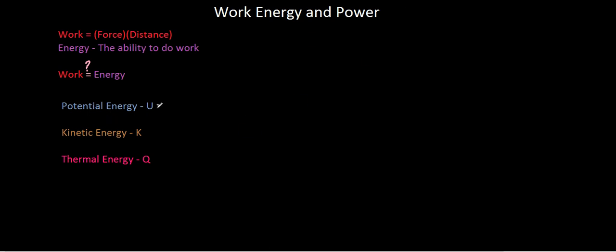And the formula they give you for potential energy, if you look in your formula sheet, is mass times gravity times height. And then the formula they give you for kinetic energy is one half the mass times the velocity squared.